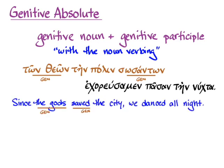For example, we have a genitive 'of the gods' and a genitive 'of saving' because we wanted to say 'since the gods saved the city, we danced all night,' using a participle, but the participle couldn't agree with anything in the main clause. Under those circumstances, you use a genitive absolute. Whatever agrees with a participle can be thought of as the subject of that participle. So here, the gods agree with the participle and are its subject, and when we turn this into good English, we make the gods the subject of the 'since' clause.